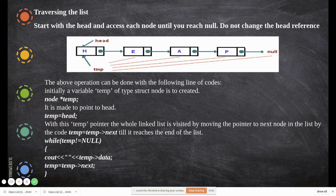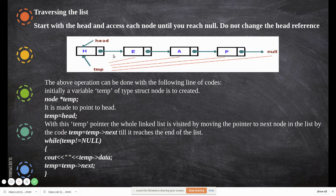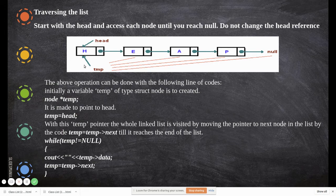First we will see traversing the list. Consider this given linked list with four nodes holding the values H, E, A, P. Each pointer points to the memory location of the next node, and the last node has a null pointer. The head pointer points to the starting node.